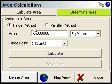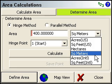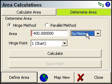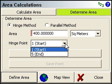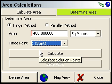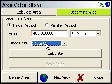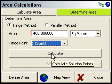So now for the hinge method, we just need to specify our desired area. I'm going to enter in 400 square meters, and you've got a lot of choices here. I'm just going to stick with the square meters. And now your hinge point can be either the start or the end point, point number 1 or point number 5 in this case. Both of those were the ends of that open side, the side that I left open. So we're going to pivot around point 1, and I'll just click calculate.